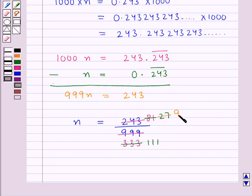Now, 3 times 9 is 27, and 3 times 37 is 111. So we get n equals 9 upon 37.